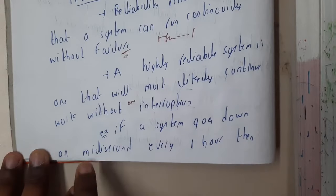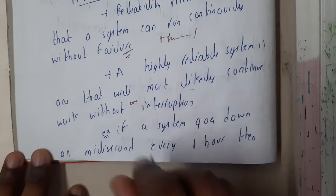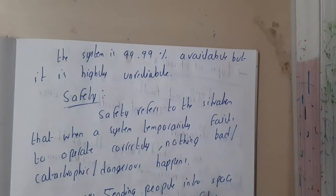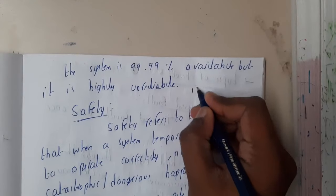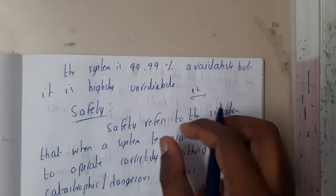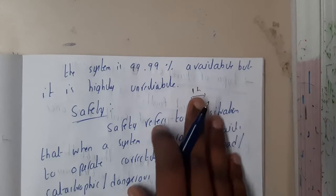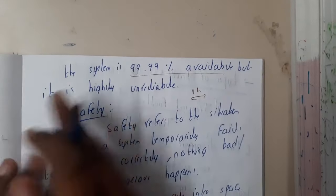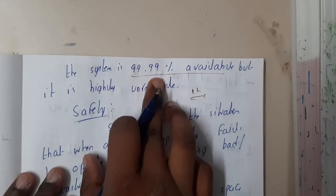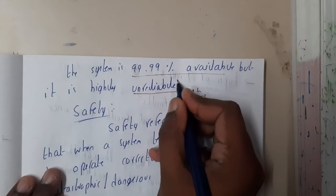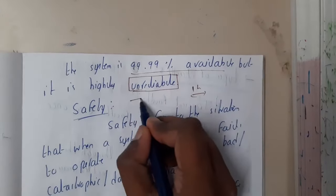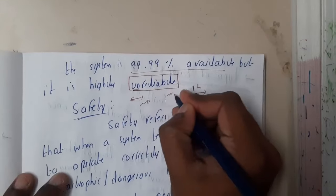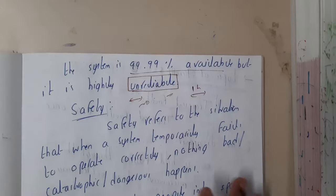For example, if a system goes down for one millisecond every hour, you can say the availability is 99.99%, but it is highly unreliable because it doesn't run continuously. If you submit your data at that exact millisecond when it's down, your work is wasted. That's why this system cannot be called reliable.